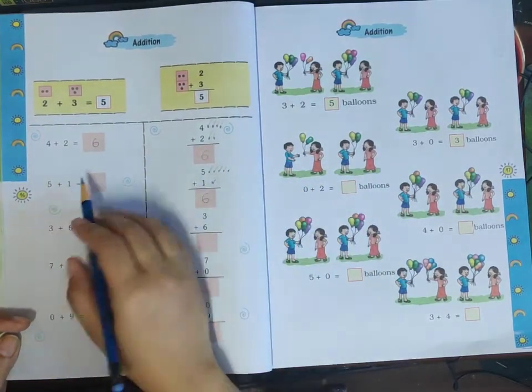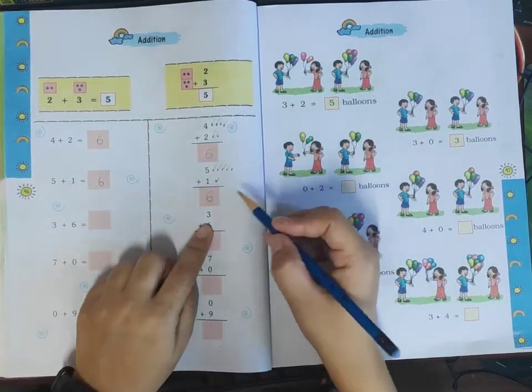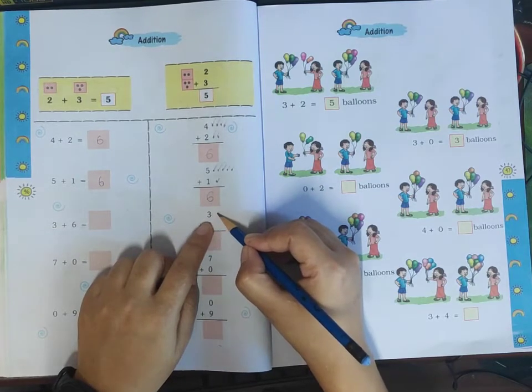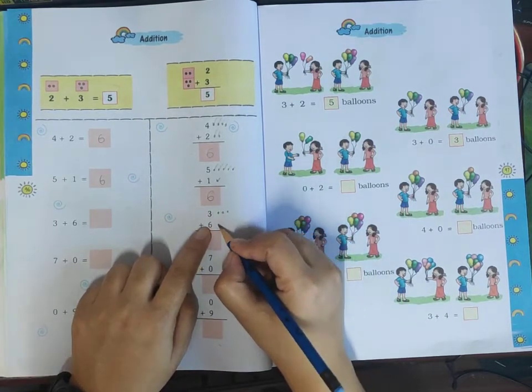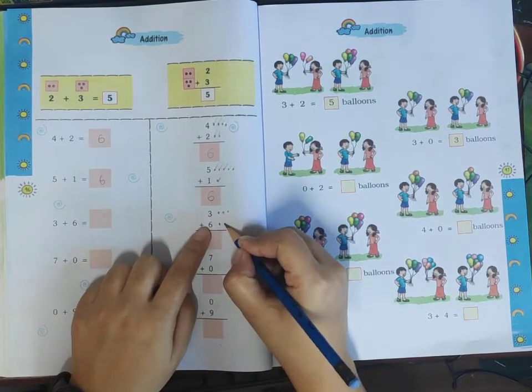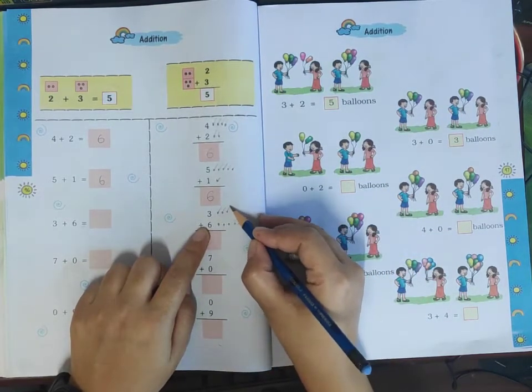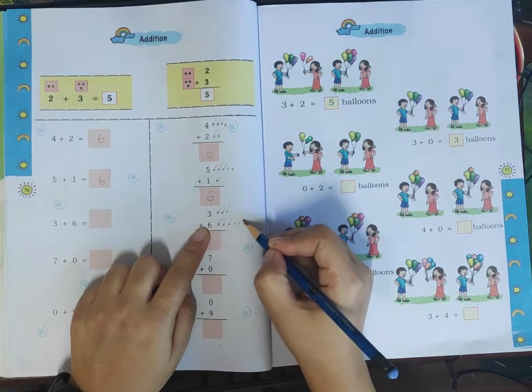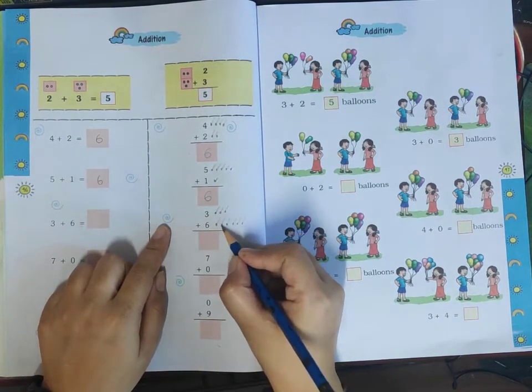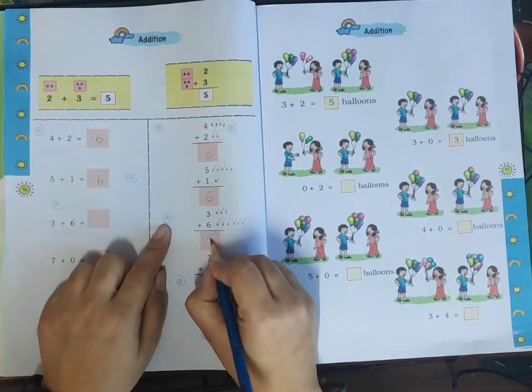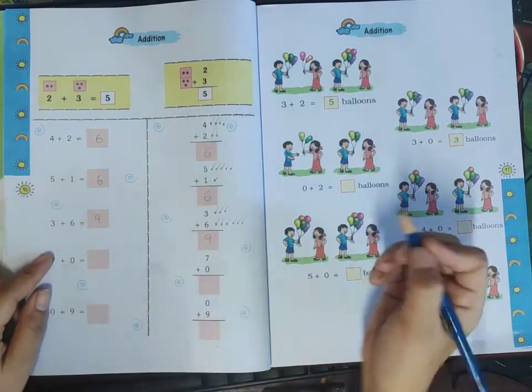Now let me show you this one. We have six here, and we need to count. One, two, three - count the dots carefully. There are six dots here. Now for this problem, let me count again: one, two, three, four, five, six, seven, eight, nine. So three plus six equals nine. Three plus six, the answer is nine.